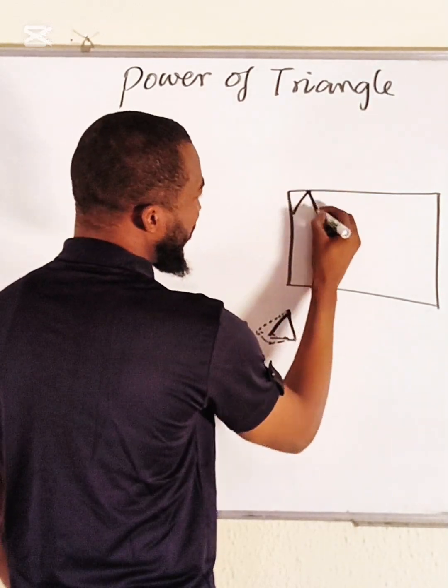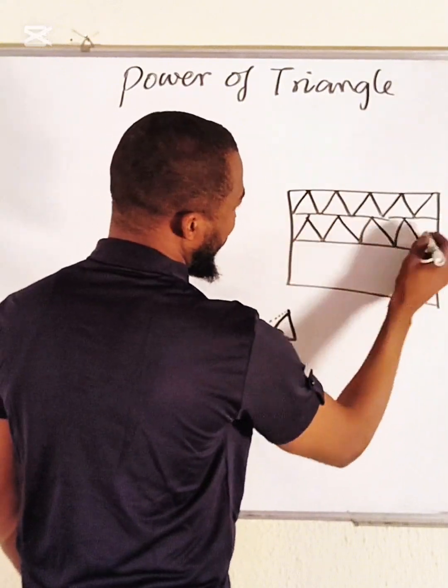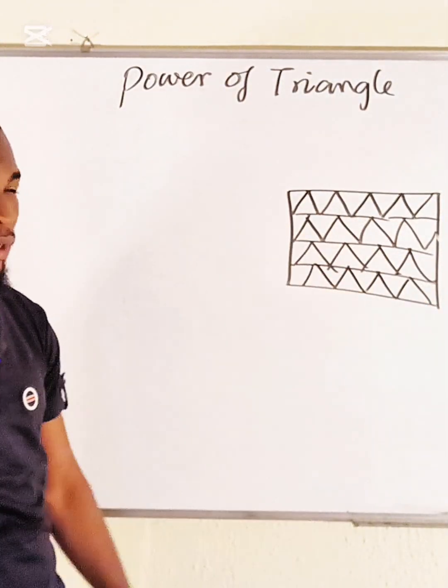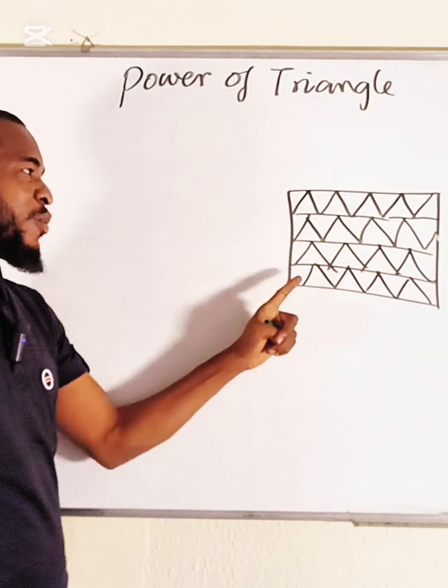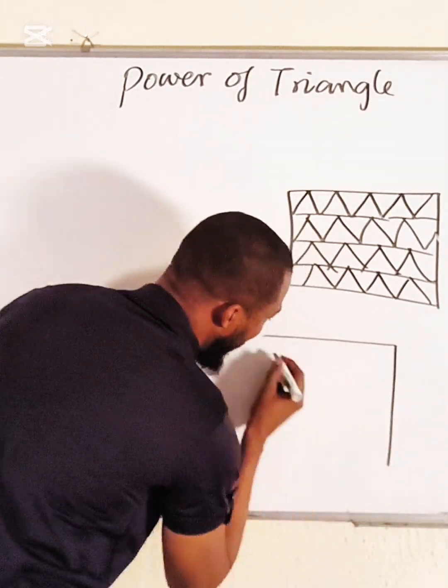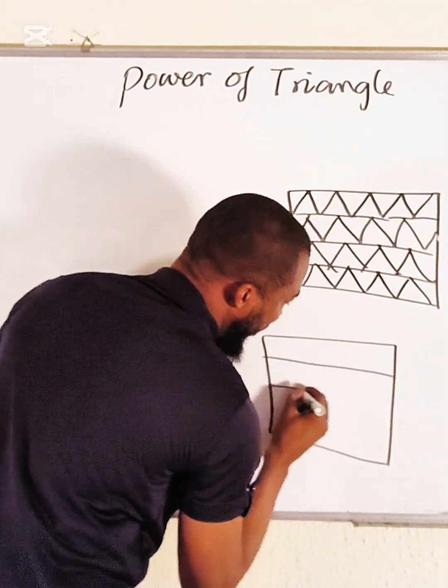So you constructed this wall using triangular blocks. Assuming this is a wall, a brick wall. Did you know that this brick wall must be very much stronger and rigid compared to this type of brick wall?